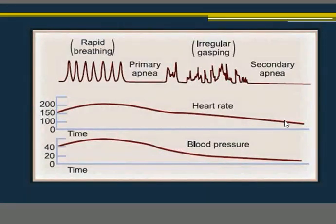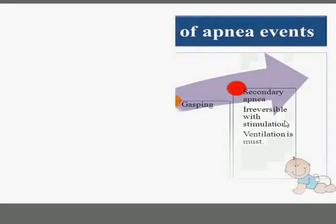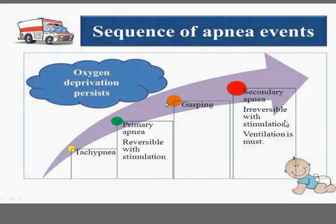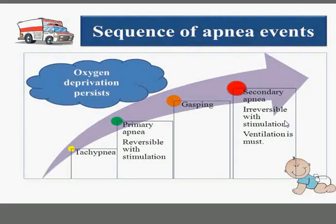To summarize the natural history of birth asphyxia: oxygen deprivation leads to rapid breathing (tachypnea), then primary apnea — which is reversible with simple measures like stimulation. If oxygen deprivation doesn't stop, the patient will experience gasping breathing, then enter secondary apnea, which is not reversible with stimulation alone. Here, ventilation is a must.